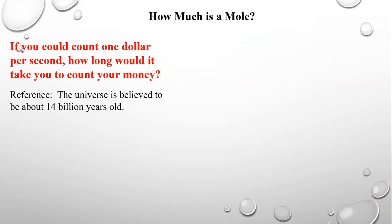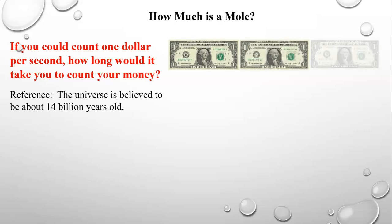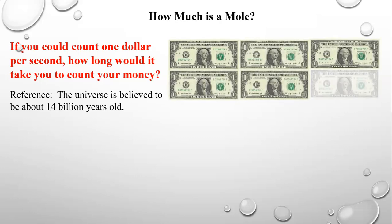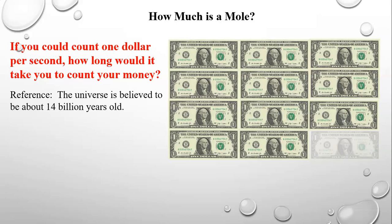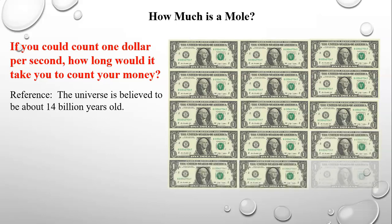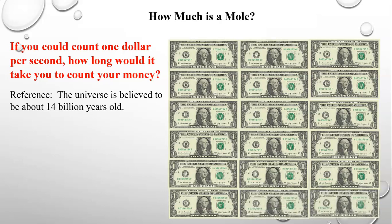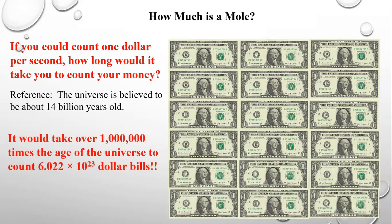Let me give you another example. If you could count $1 per second, how long would it take you to count your money if you had that many dollars? Just as a reference, the universe is believed to be about 14 billion years old. If you could count a mole of dollar bills at $1 per second, the answer is it would take over 1 million times the age of the universe. So it's this unbelievably large number.